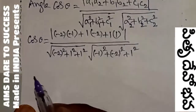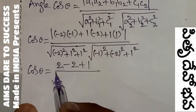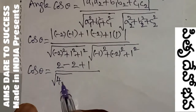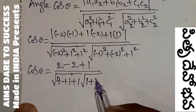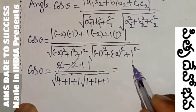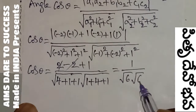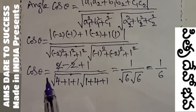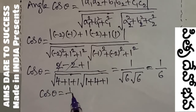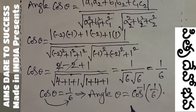Next, normal simplification. cos theta equals: minus into minus gives 2, plus minus 2 gives minus 2, plus 1 gives 1. Denominator: minus 2 squared is 4, plus 1 squared is 1, plus 1 squared is 1, into root of minus 1 squared is 1, plus minus 2 squared is 4, plus 1 squared is 1. Numerator: 2 minus 2 plus 1 equals 1. Denominator: root of 6 into root of 6 equals 6. So cos theta equals 1 by 6, therefore theta equals cos inverse of 1 by 6.